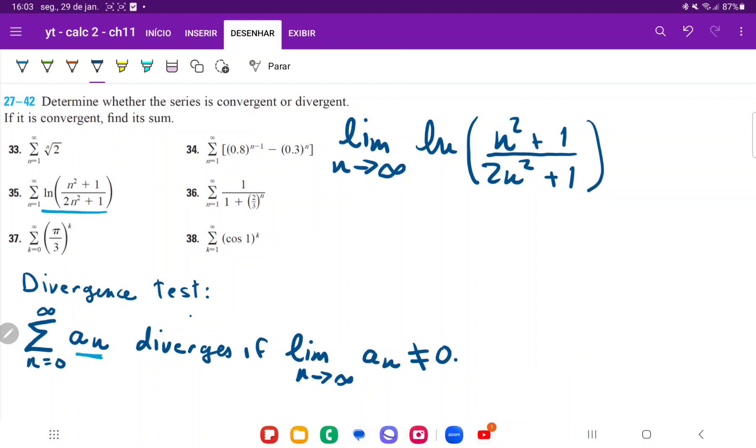And so what we're going to do here is we're going to divide the expression that's within the ln by the highest power, which in this case is going to be n squared.